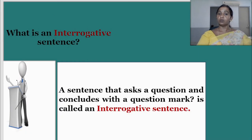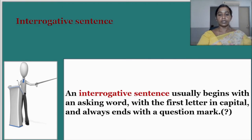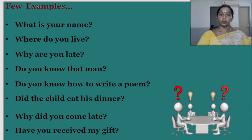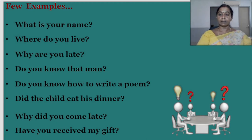Moving further, we have the interrogative sentence. A sentence that asks a question and concludes with a question mark is called an interrogative sentence. An interrogative sentence usually begins with an asking word with the first letter in capital and always ends with a question mark. Examples: 'What is your name?' 'Where do you live?' 'Why are you late?' 'Do you know that man?' 'Do you know how to write a poem?' 'Did the child eat his dinner?' 'Why did you come late?' 'Have you received my gift?'